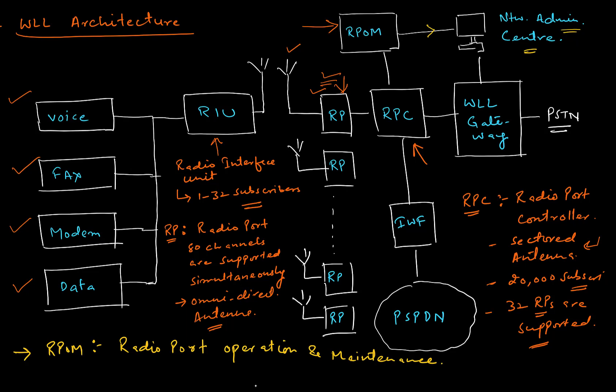At the bottom, we have IWF, which stands for Inter-Networking Function. This provides a gateway to your PDN, which stands for Packet Data Network or Public Switched Packet Data Network — that is your internet.